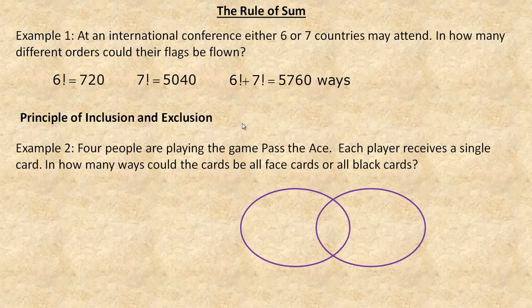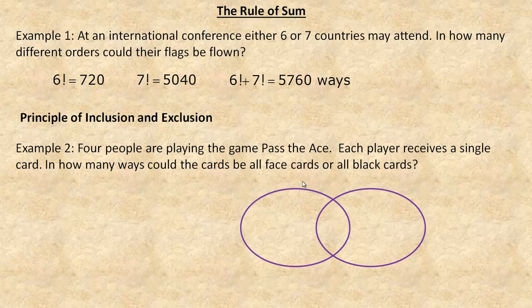Now we're going to talk about the principle of inclusion and exclusion, which applies when you have sets with some overlap. In this second example, four people are playing the game 'pass the ace.' Each player receives a single card. The question is: in how many ways could the cards be all face cards or all black cards? This is a permutation counting question because there are four distinct people.